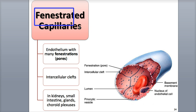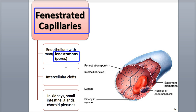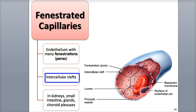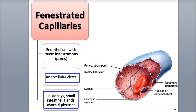The fenestrated capillaries contain endothelial cells whose plasma membranes contain small pores called fenestrations. They also have intercellular clefts between their endothelial cells. These capillaries are located in the endocrine glands, the kidneys, the villi of the small intestine, the choroid plexuses in the brain, and the ciliary processes of the eyes. The fenestrations — these pores within the endothelial membranes — give them a Swiss cheese-like appearance.